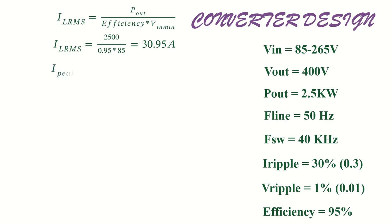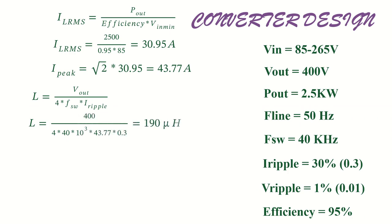Now peak value of the inductor current is 30.95 times root 2, which is 43.77 ampere. Now the value of inductor is calculated using the equation L equals output voltage divided by 4 times switching frequency times current ripple. That is L equals 400 divided by 4 times 40 kilohertz times 43.77 times 0.3, which gives 190 microhenry.